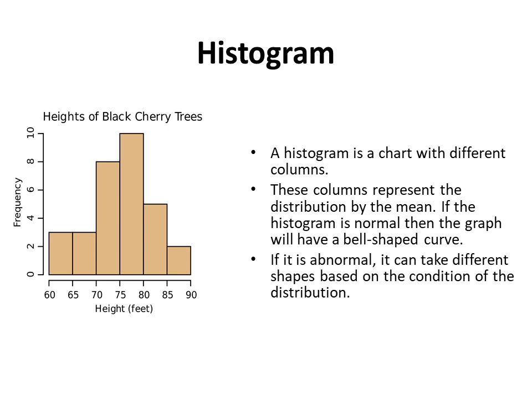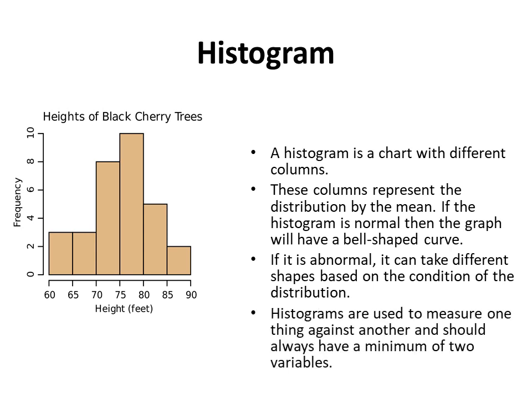If it is abnormal, it can take different shapes based on the condition of the distribution. Histograms are used to measure one thing against another and should always have a minimum of two variables.